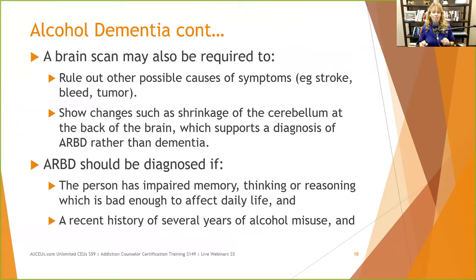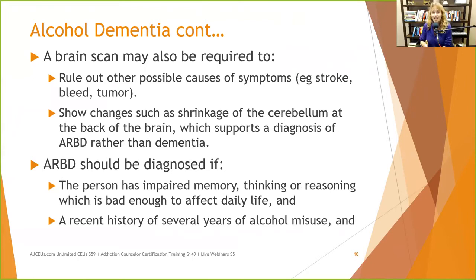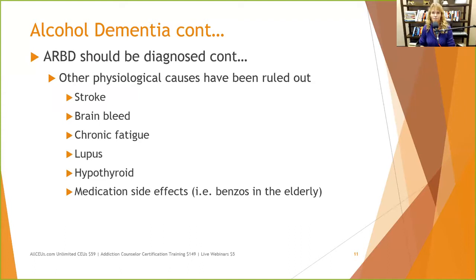A brain scan may show changes such as shrinking at the cerebellum, which supports a diagnosis of ARBD rather than true dementia. If shrinking in the cerebellum is found, a positive diagnosis can be made — which gives people hope, since this is not Alzheimer's but alcohol-related brain damage that will likely improve with treatment. An ARBD should be diagnosed if the person has impaired memory, thinking, or reasoning affecting daily life, a recent history of several years of alcohol misuse, and other physiological causes — such as stroke, brain bleed, chronic fatigue, lupus, hypothyroid, or medication side effects — have been ruled out.